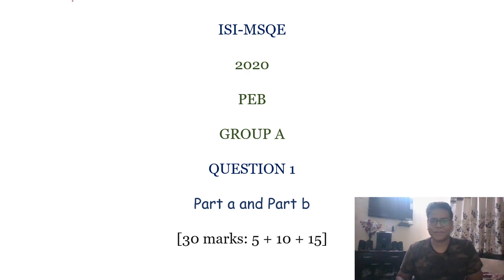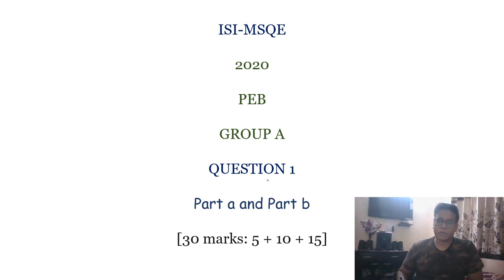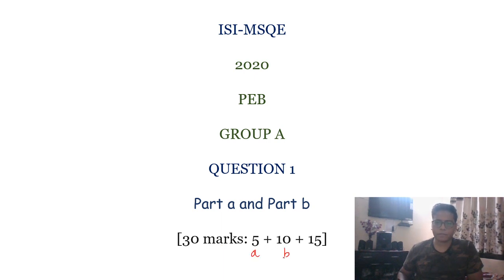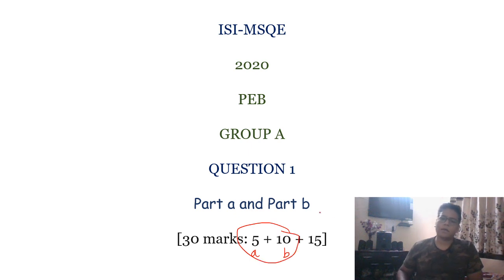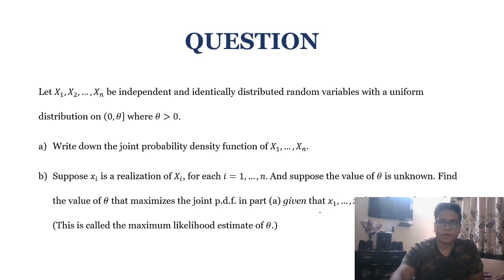Today we are going to do ISIMSQ problem number one of group A PED. This question consists of three parts: part A, B, and C. Part A consists of five marks and B consists of ten marks. I'm doing these two parts, and for the next part I'll make another video. Let's see what the question is.